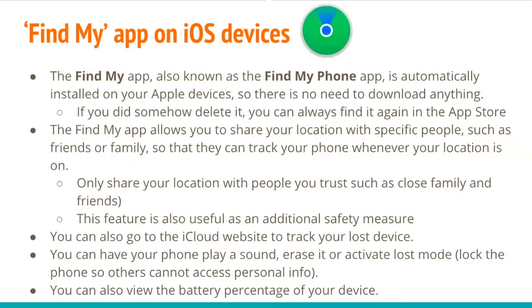The Find My App on iOS devices. The Find My App, also known as the Find My Phone app, is automatically installed on your Apple devices. If you somehow delete it by accident, you can find it again in the App Store and re-download it. The Find My App allows you to share your location with specific people, such as friends or family, so that they can track your phone whenever your location is turned on. You should only share your location with people you trust, such as close family and friends. This feature is also useful as an additional safety measure.